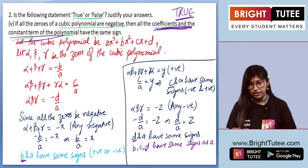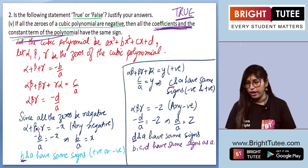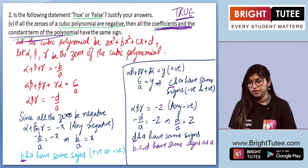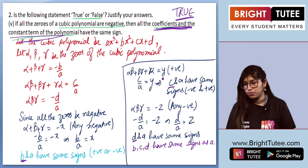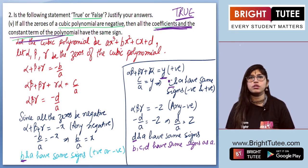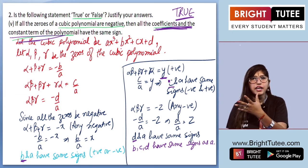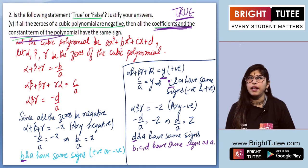Quick recap: alpha, beta, gamma — if all are negative, then the sum of these zeros will be a negative number. If we take the product of any two zeros, that will be positive. And if we multiply all three — minus into minus into minus — we get a negative number. So the product of all three zeros is negative.